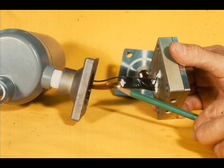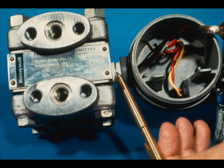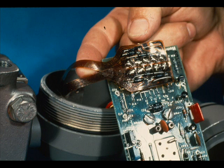Gold wires connect the bridge resistors to a flexible strip. The flexible strip goes through a sealed header and connects to the solid state electronic circuit board.